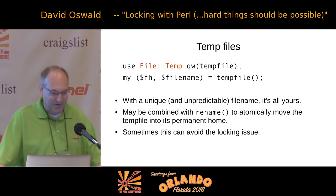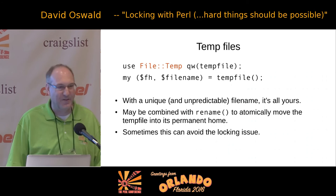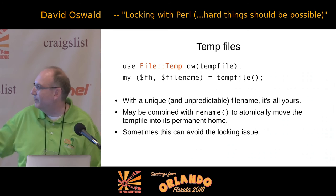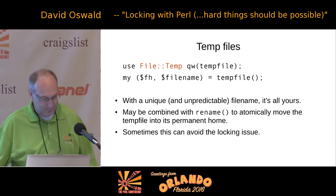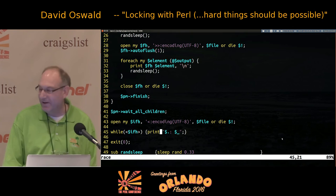Another way to skirt the issue is to simply use temp files — don't rely on a file of a particular name. Use File::Temp to get a temp file that's virtually guaranteed to be unique, do your work in that temp file, and then combine it with rename to atomically move the temp file to its permanent home later on. Sometimes you can actually avoid the locking issue entirely.